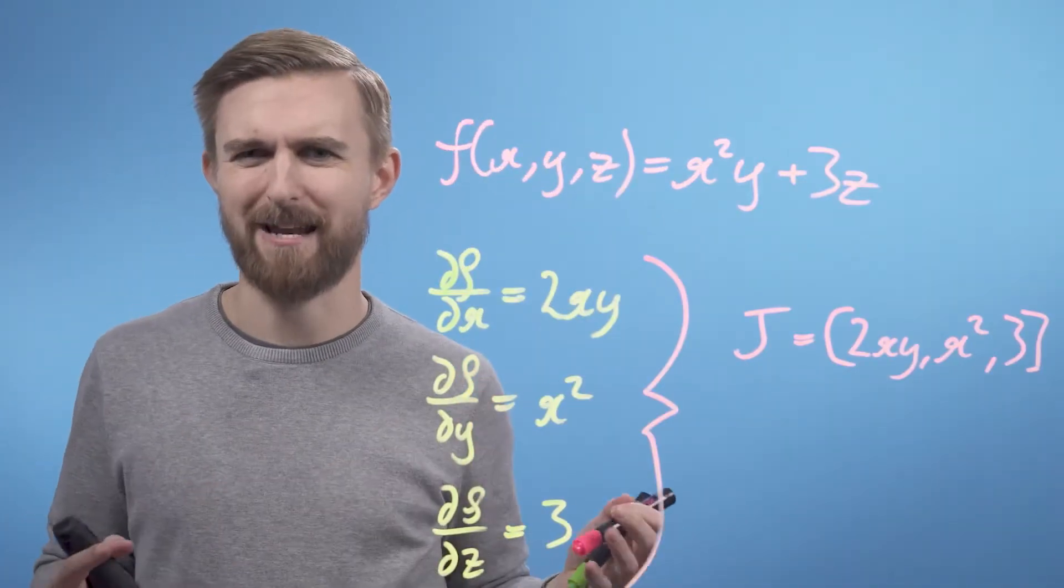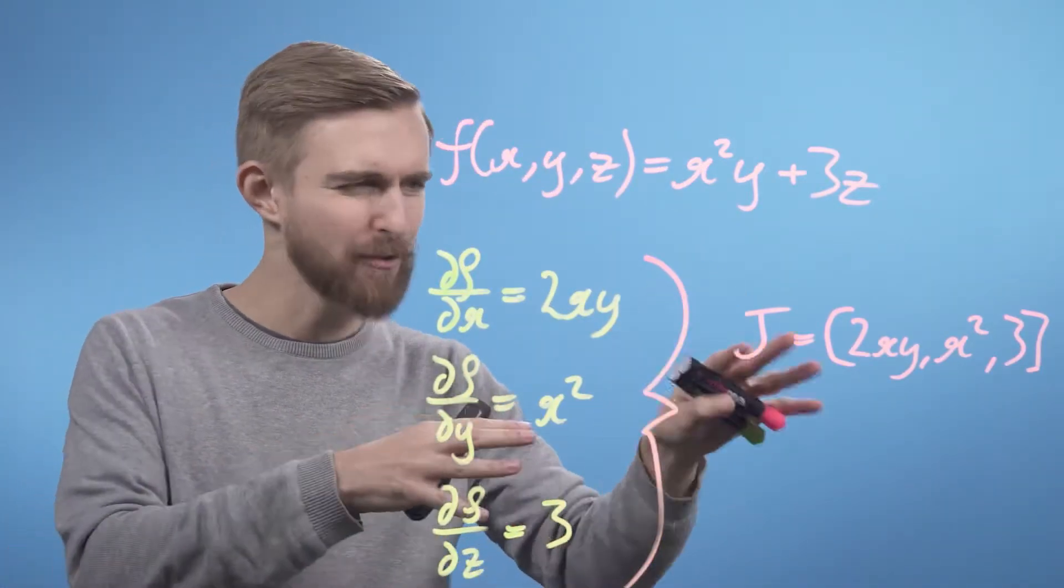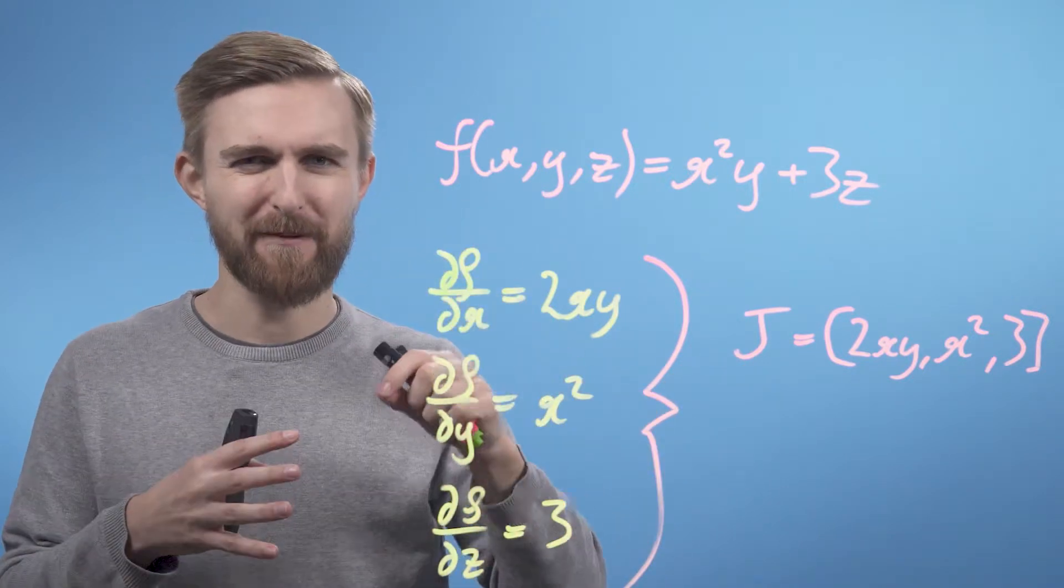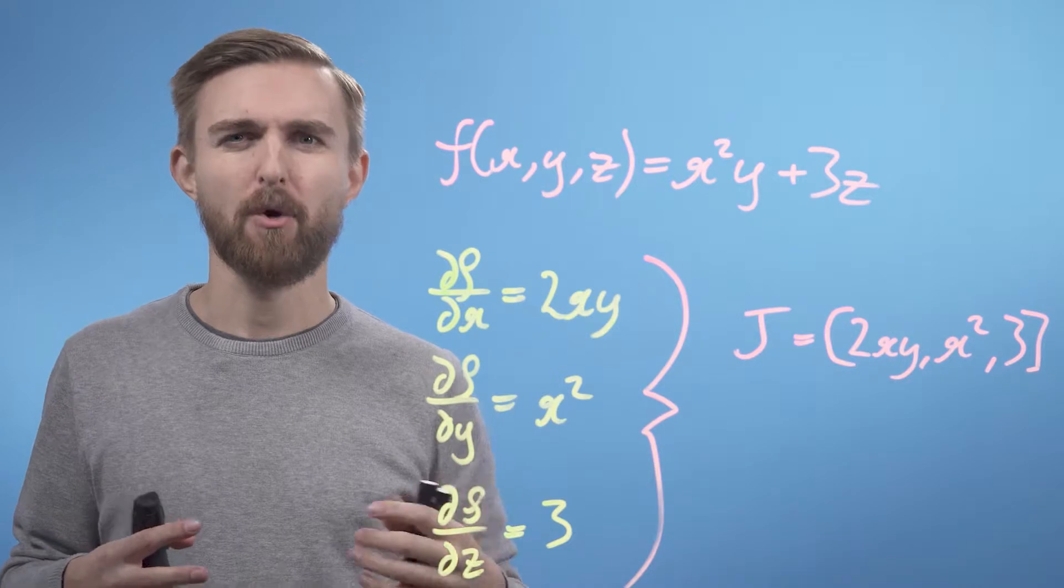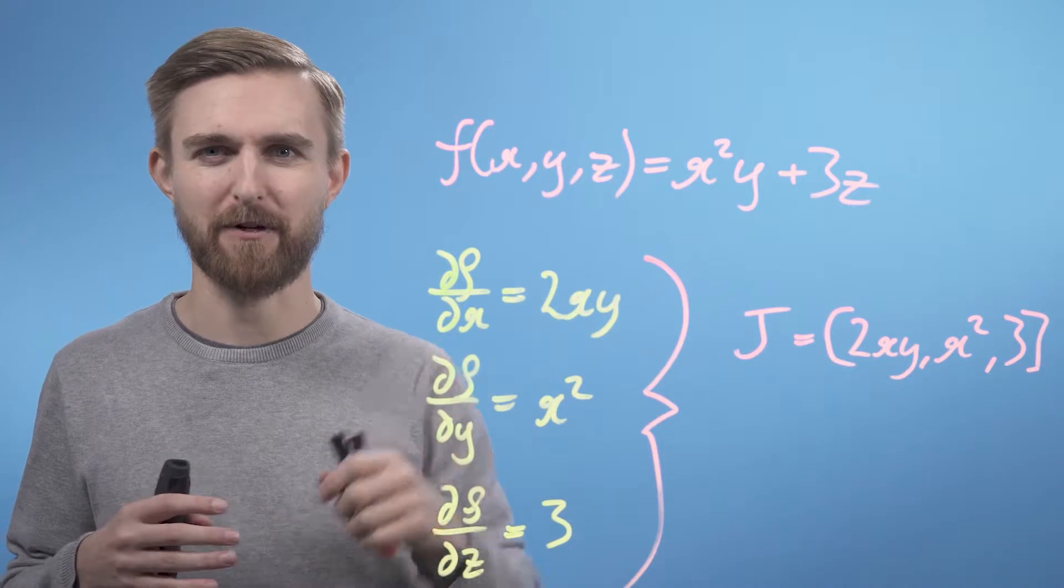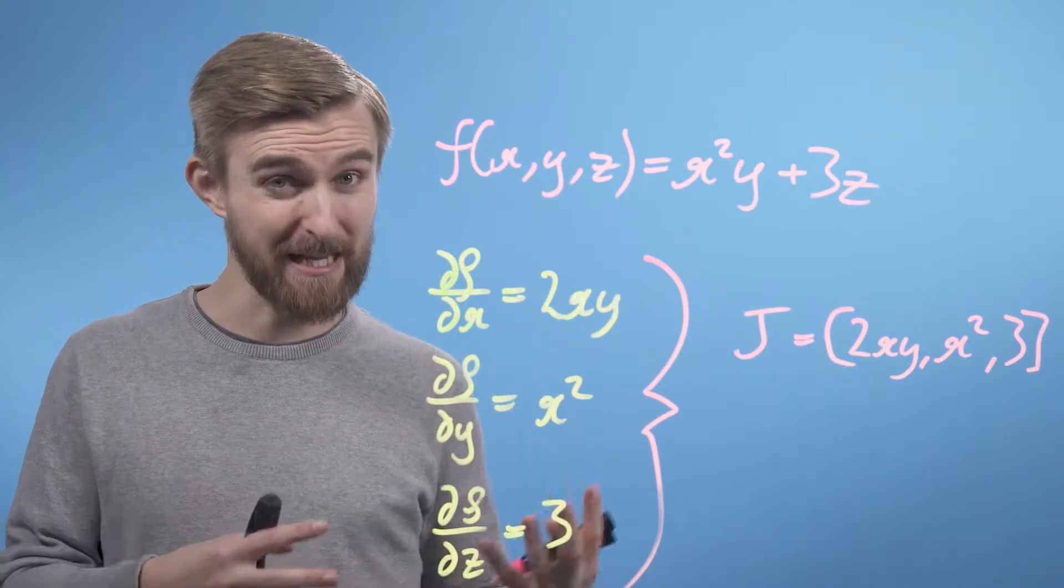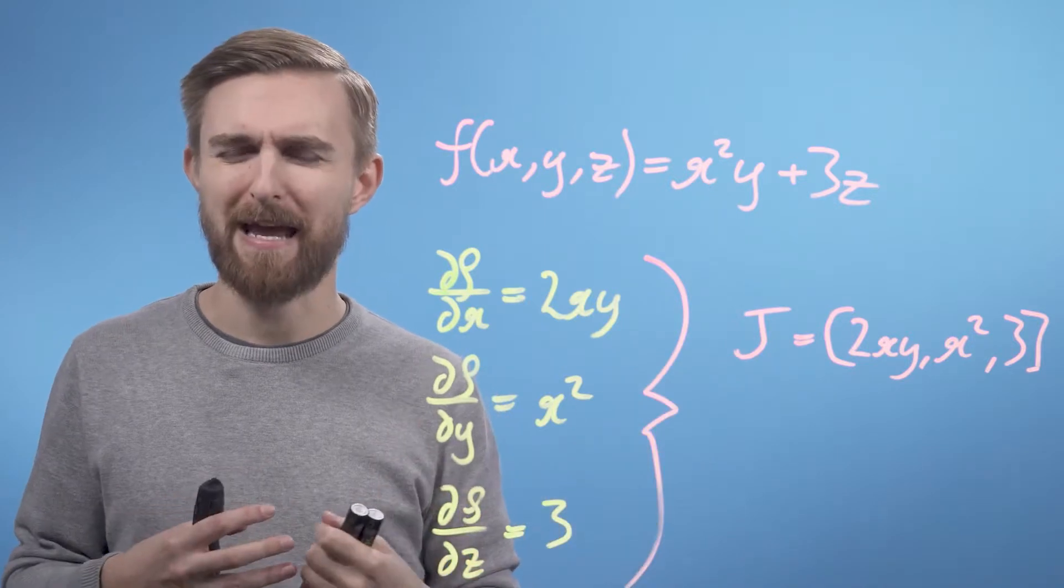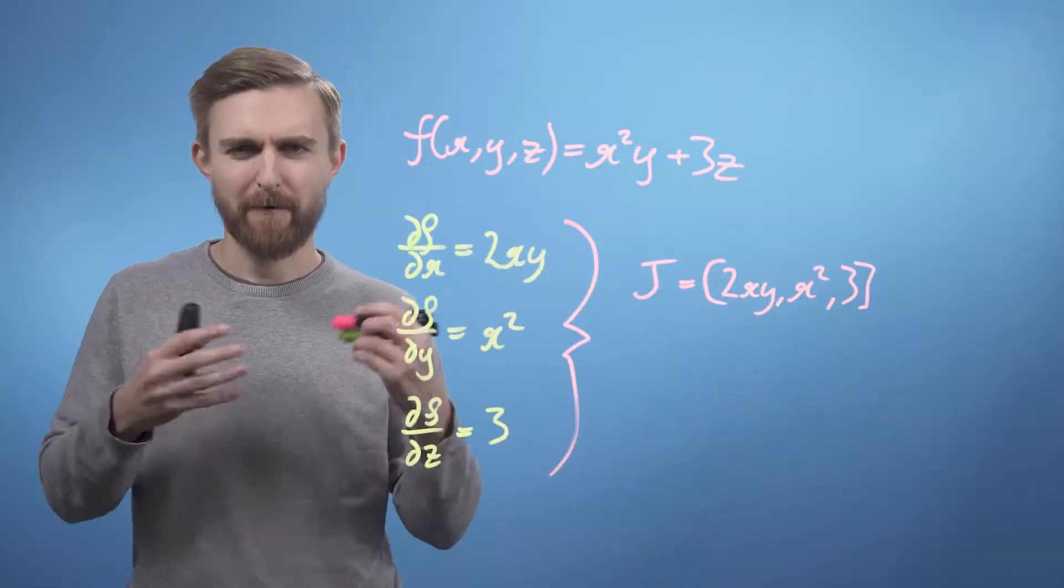So, what does this tell us? We now have an algebraic expression for a vector which, when we give it a specific x, y, z coordinate, will return a vector pointing in the direction of steepest slope of this function. The vector for this particular function has a constant contribution in the z direction, which does not depend on the location selected.